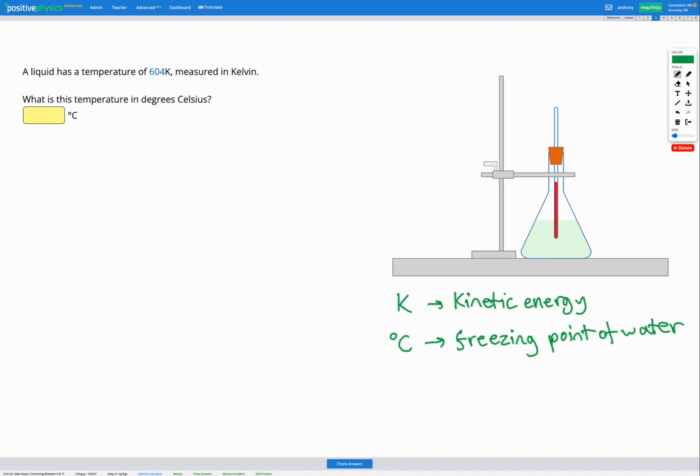Now, Kelvin and degrees C, each unit is worth the same. So an increase of one Kelvin is the same as an increase of one degree C, and the same with a decrease. So the size of those units are the same.